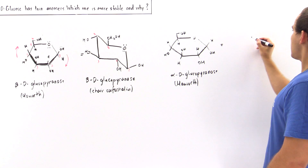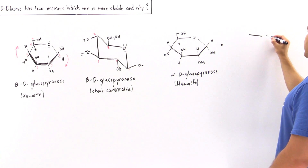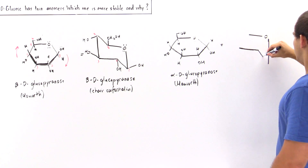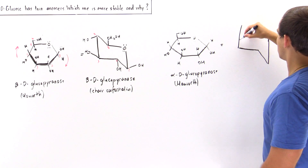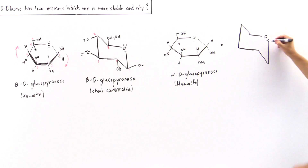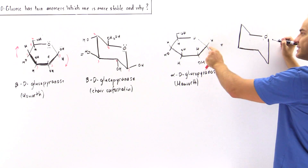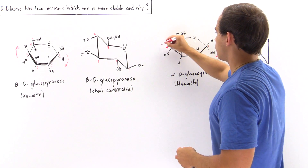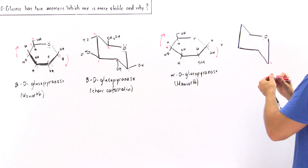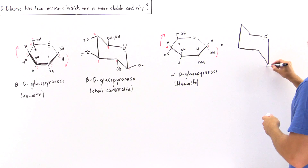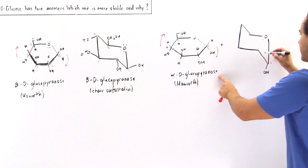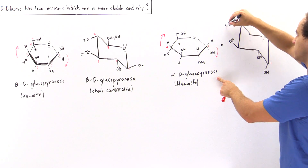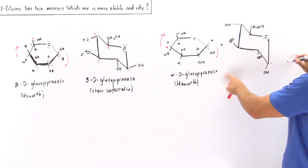Now we draw the chair conformation of alpha-D-glucopyranose. It looks exactly like the beta version except the orientation at carbon one is reversed. Carbon one is pulled down, carbon four is pulled upward. On carbon one, the hydroxyl now points downward — and the downward direction is axial — so the OH points along the axial position. Everywhere else it is exactly the same: OH points equatorially on carbons two, three, four, and five — that's one, two, three, four equatorial groups. This is the more stable chair conformation of alpha-D-glucopyranose.